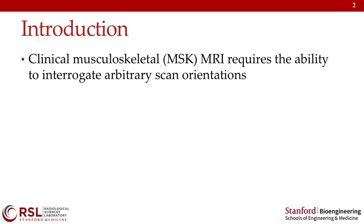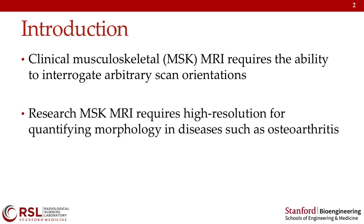I wanted to start by motivating why methods like this are useful by talking about current implementation of MSK imaging protocols in MRI. From a clinical perspective we typically require the ability to interrogate tissues in the MSK system at different scan orientations, because there are a lot of subtle tissues and pathologies that may lie in arbitrary scan orientations. From a research perspective we want to quantify subtle morphological changes that occur in diseases such as osteoarthritis — for example, changes in cartilage thickness or meniscal locations — all of which requires high resolution MR imaging.